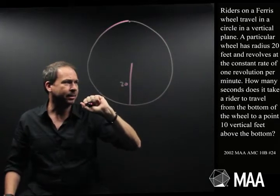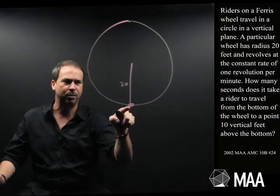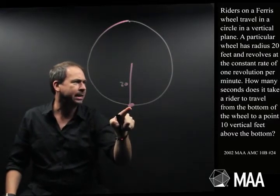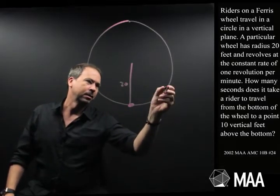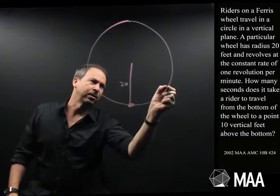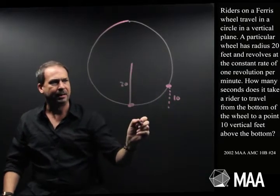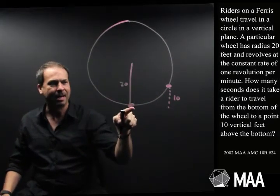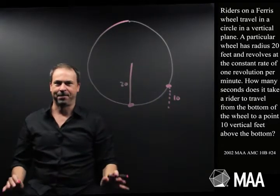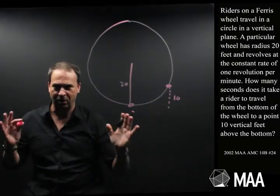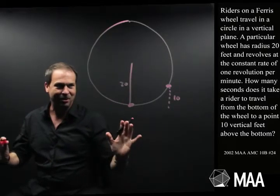How many seconds does it take a rider to travel from the bottom of the wheel? Okay, I guess I have to draw a nice radius then. Bottom of the wheel. To a point 10 vertical feet above the ground. So this rider is going to go around the circle and we're going to get to the point where it's 10 feet above. So I guess we want to know how many seconds does it take then for the rider to go from there to there on this wheel? Alright, I feel like I've got the question under control. I know what at least I'm meant to be doing. Still not quite sure how to do it, but at least I know what I'm meant to be doing.